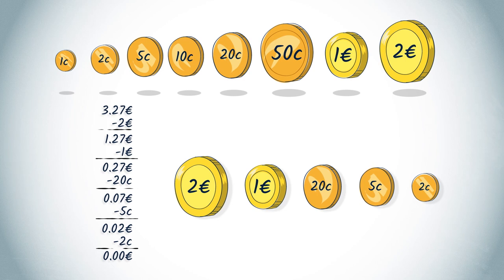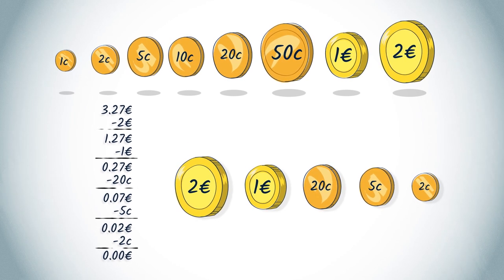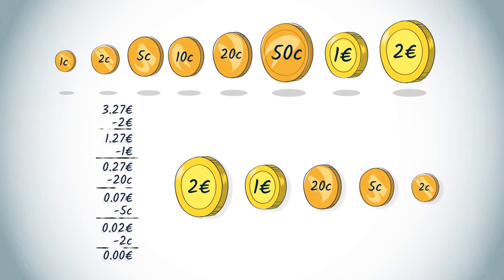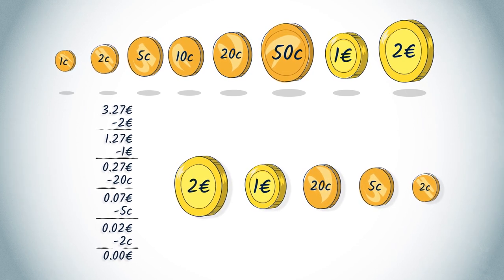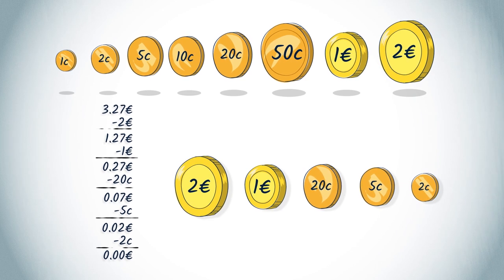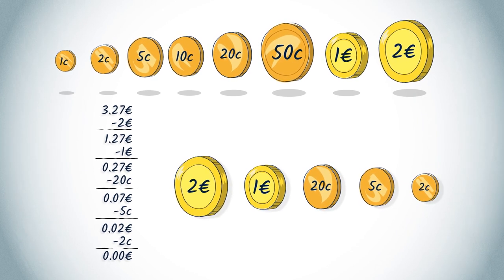To show this, it's enough to notice that each coin has a value at least equal to twice the coin of the lower value. This means that it's always going to be more efficient to give priority to the higher value piece, because one piece will be returned instead of several.